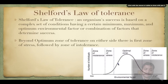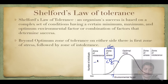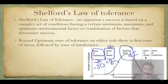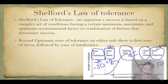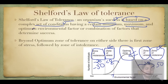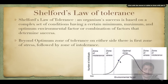If the environmental factor - let's assume temperature - goes below zero degrees Celsius, it becomes a zone of stress. If it goes to minus 20 or minus 30 degrees Celsius, it becomes a zone of intolerance, where individuals cannot tolerate the temperature. The optimal zone has maximum survival. Similarly, if temperature exceeds 40 degrees it becomes a zone of stress, and beyond 50 or 60 degrees it becomes a zone of intolerance. An organism's success is based on a complex set of conditions having a minimum, maximum, and optimum environmental factor.